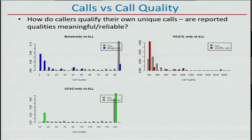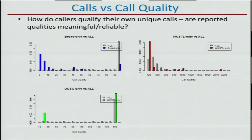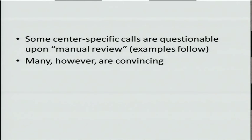It's instructive to see what callers say about themselves through their quality scores. The quality scores reported by the Broad caller for the center of the diagram are high, while quality scores for calls unique to Broad are lower. So they're making more calls where nobody else did, but they're less sure — which is intuitive. One would expect that where everybody agrees, that's probably the most reliable set of calls.